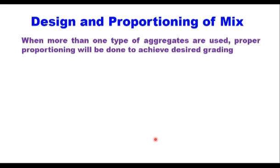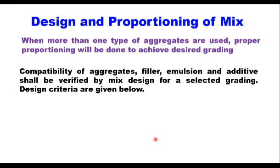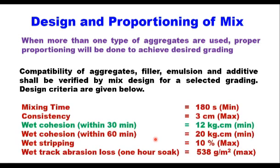When more than one type of aggregate is used, proper proportioning is done to achieve the desired grading using methods discussed in earlier videos. The compatibility of aggregate, filler, emulsion, and additive shall be verified by mix design. Design criteria per IRC SP 81:2008 are: mixing time minimum 180 seconds, consistency maximum 3 cm, wet cohesion within 30 minutes should achieve 12 kg·cm, wet cohesion within 60 minutes around 20 kg·cm, wet stripping not more than 10%, and wet track abrasion loss after one-hour soak maximum 538 g/m².